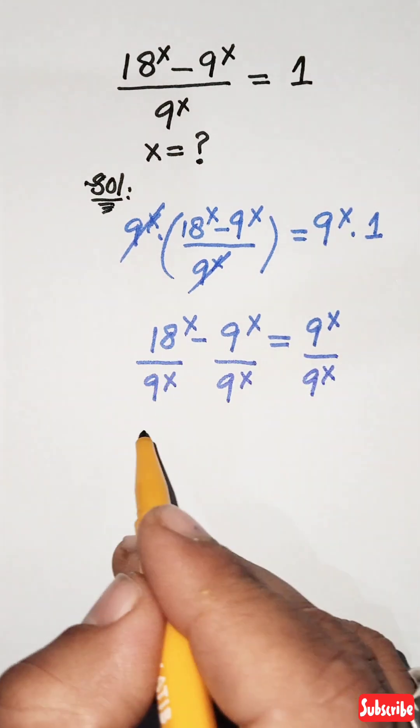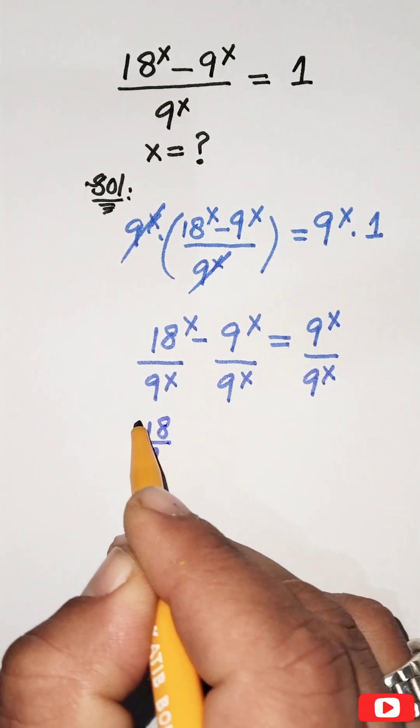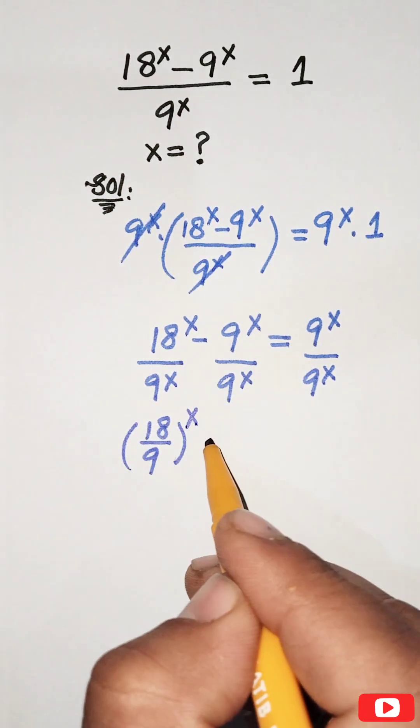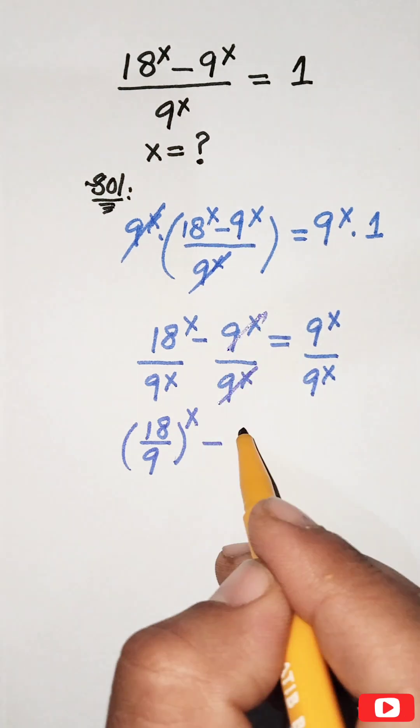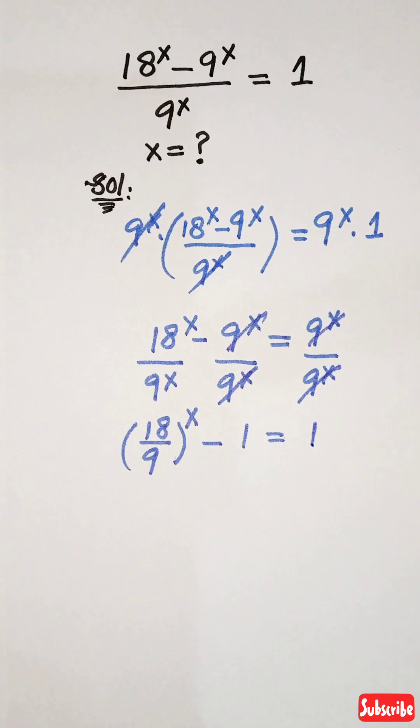By the laws of indices, we can write 18 over 9 to the whole power x. Minus 9^x canceling with 9^x gives minus 1. Similarly, 9^x canceling with 9^x gives 1.